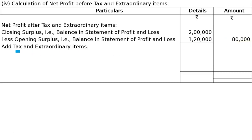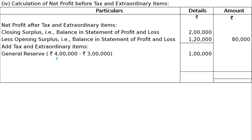Add tax and extraordinary items. General reserve: surplus 2,00,000 equals 1,00,000. Notes to accounts first point: 3,00,000 was opening value and 4,00,000 was closing value. So 4,00,000 minus 3,00,000 equals 1,00,000. General reserve has increased.